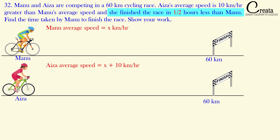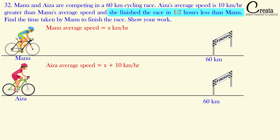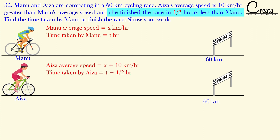Aiza finishes the race half an hour less than Manu. Obviously, since Aiza's speed is 10 km/h greater, she will finish the race faster. She finishes half an hour before Manu. Let's assume the time taken by Manu as t, so the time taken by Aiza will be t minus one-half.